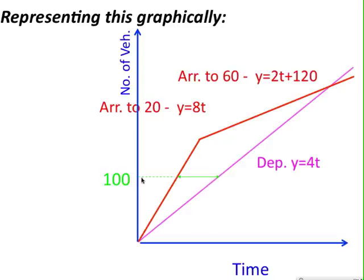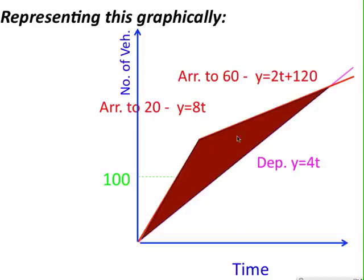If we add up the delays for all of the vehicles that are arriving during this time period, that's equal to the area between these curves. And we can find the average by dividing that area by the total number of vehicles.